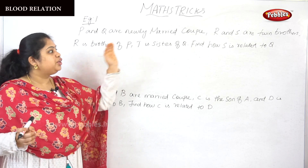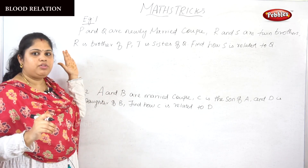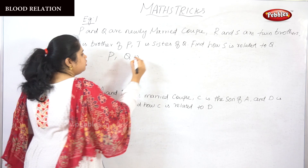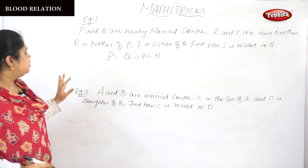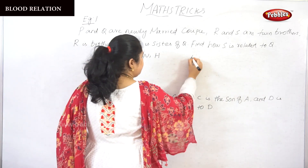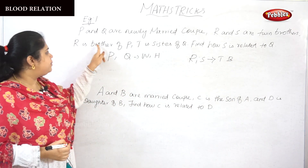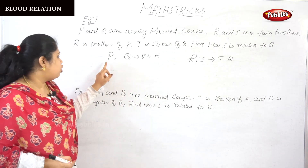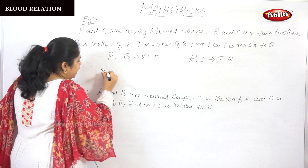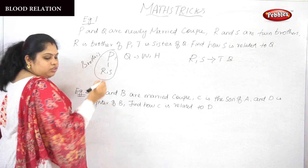Let me explain one more time. P and Q are a newly married couple — couple means husband and wife. We assume the male is named first, so P is the husband. R and S are twins brothers, and R is brother of P. So if we take R here, S also comes along. Therefore P, R, and S — all three of them are brothers.